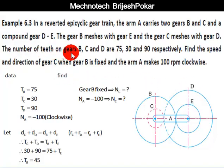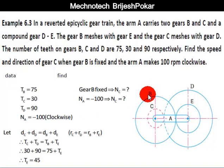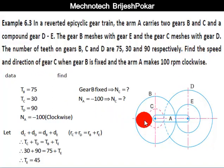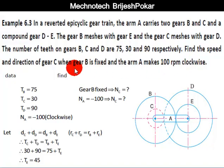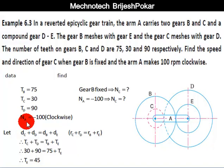The number of teeth given are: tb = 75, tc = 30, and td = 90. We have to find the speed and direction of gear C — that is, nc — when gear B is fixed and arm A makes 100 rpm in a clockwise direction. Since it is clockwise, we consider na = -100 rpm.